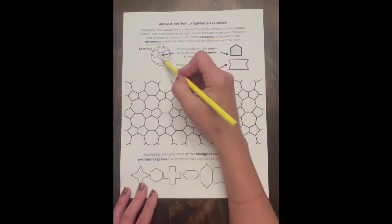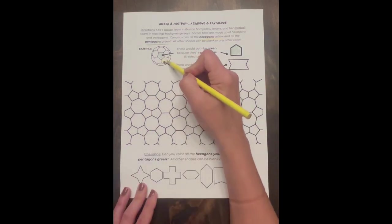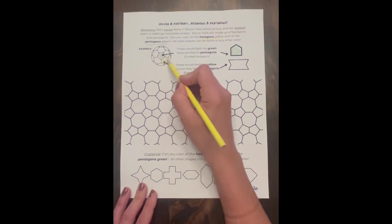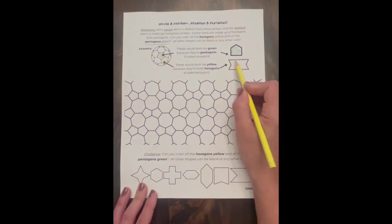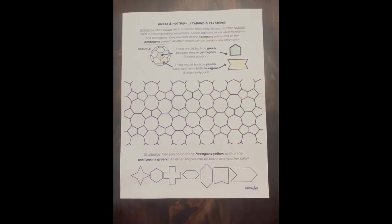And then below, these shapes are hexagons because they have six sides. One, two, three, four, five, six. One, two, three, four, five, six. So even though they look a little different, because they have six sides they're both hexagons.